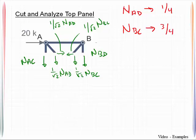And once you find that we can then write a relationship here that says NAD is equal to negative one-third NBC.